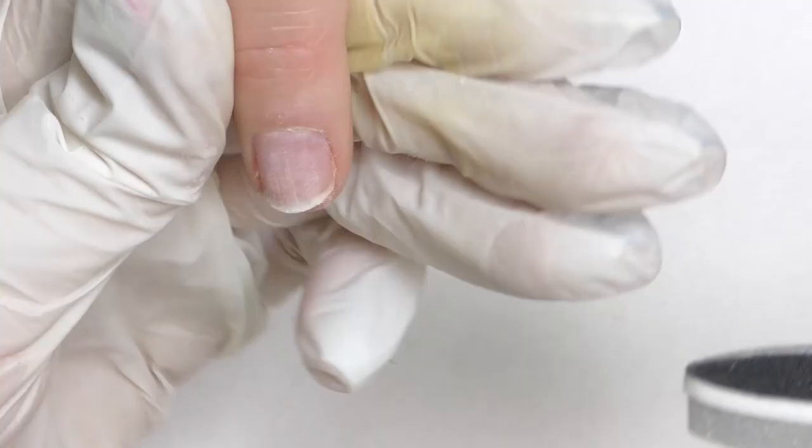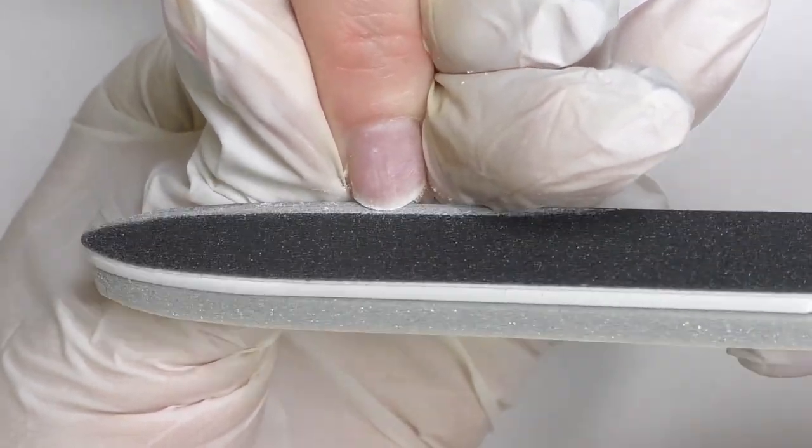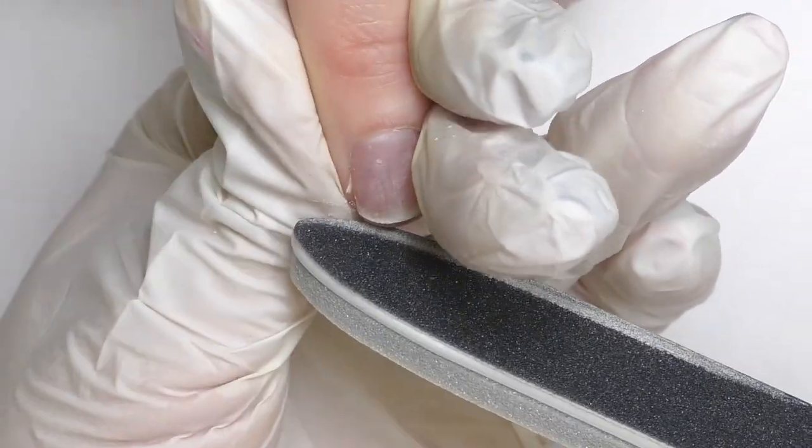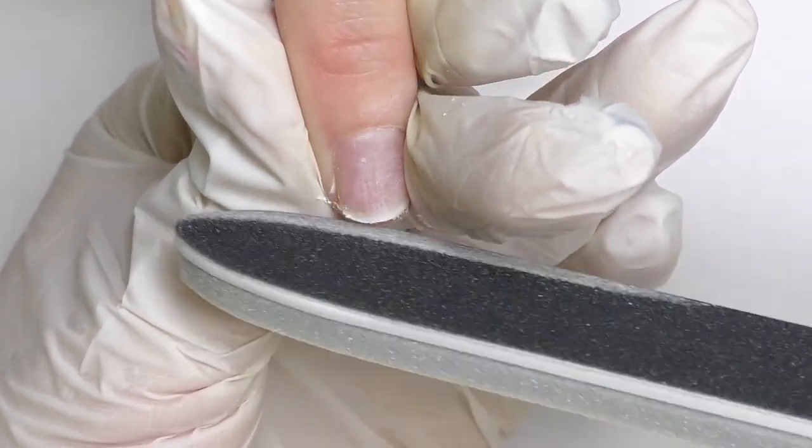You do not need to file them all short. Some of the nails are broken, some of them might have some sharp edges. We need to file them to make them smooth. And also, as you can see, some of the corners are missing, so we are going to fix all that.